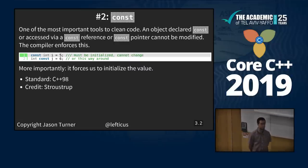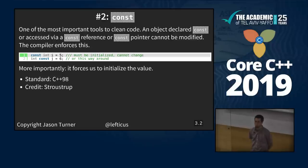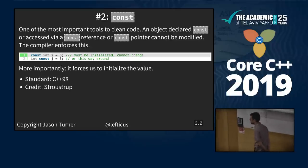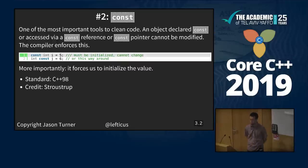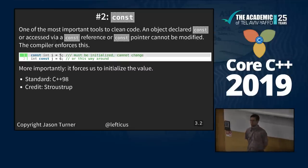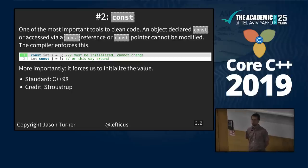An object declared const, or accessed via const reference, const pointer, or pointer to const, cannot be modified — the compiler enforces this for us. C++98. As far as I can tell, the credit goes to Bjarne Stroustrup, the original creator of C++. It did not come from any previous language. And yes, you can use east const or west const — they are both valid.